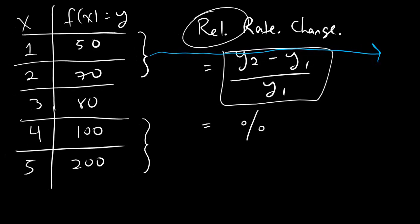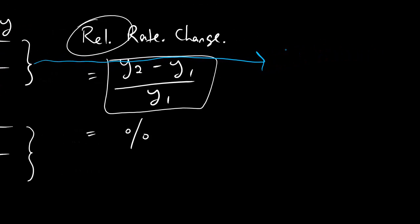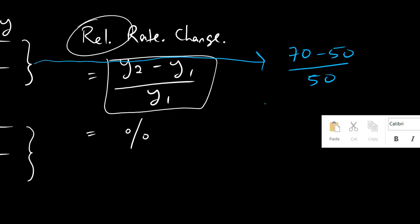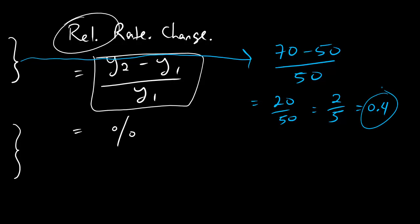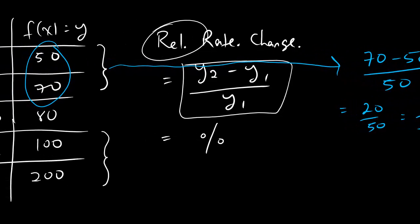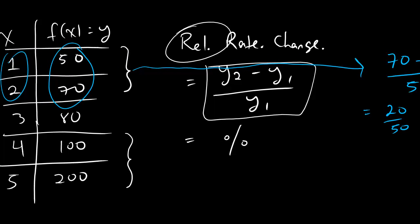We're going to need the y values. And the only two things that we need here are the only two y values, 70 and 50. So, the relative rate of change between those two points is going to be 70 minus 50 over 50. And that's 20 over 50, which is 2 over 5. And if you want a number for that, that's exactly equal to 0.4. So, the relative rate of change between x equals 1 and x equals 2 is 0.4. And now, let's do the same thing over here.